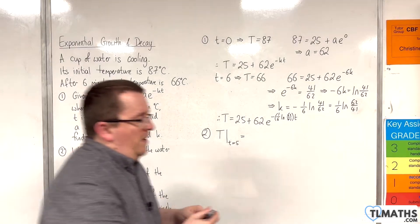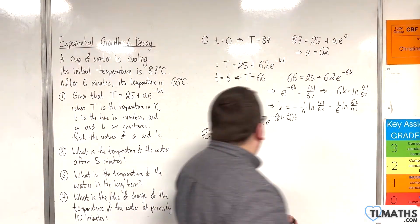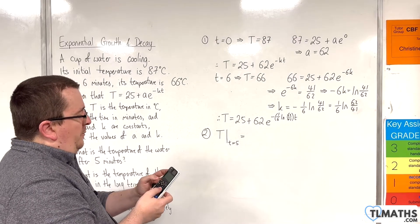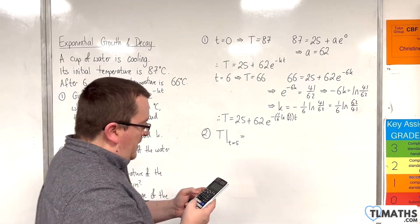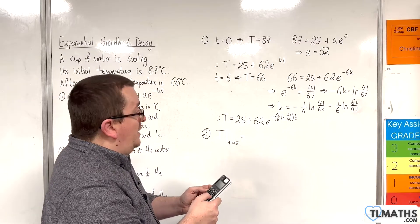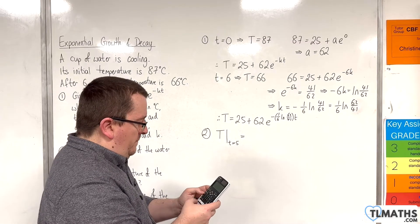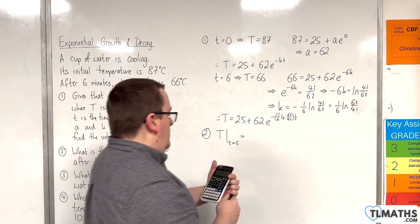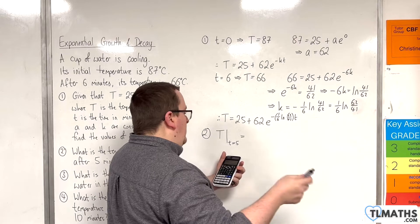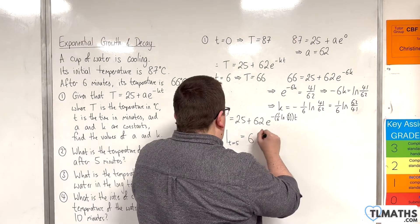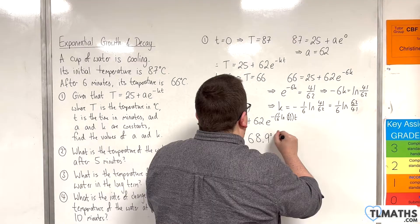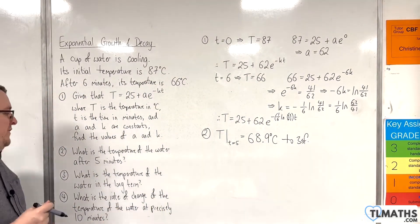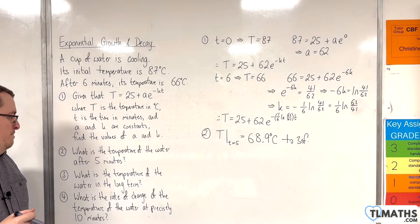So that's just quite straightforward, right? We can just substitute the T is 5 into this. So 25 plus 62 times by E to the power of minus 1 sixth times the natural log of 62 over 41, and then times that by 5. And we get 68.92568021, so 68.9 degrees centigrade to 3 significant figures. Okay? So that's the temperature of the water after 5 minutes.